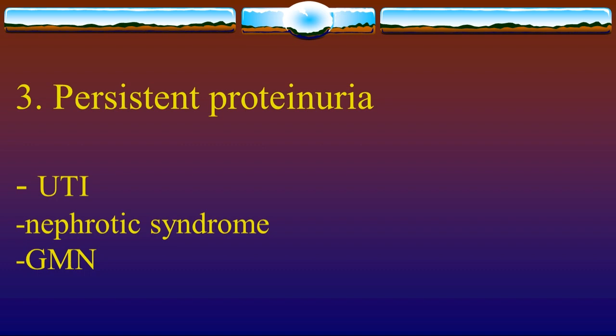Proteinuria causes include transient proteinuria due to fever and exercise, and orthostatic proteinuria — absent at night — diagnosed by sequential 12-hour urine collection. Orthostatic proteinuria may be benign or indicate glomerular disease.